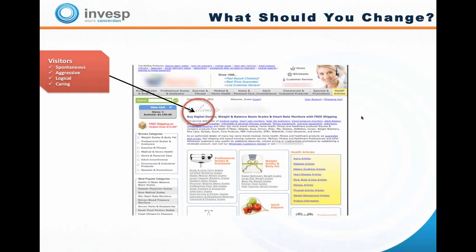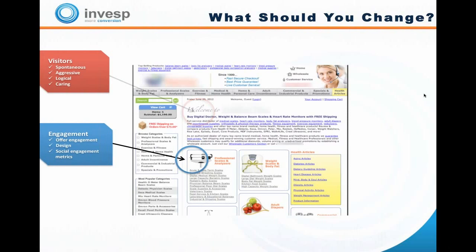Caring type personas actually read your about us page and want to get to know you closely. The site says 'since 1999' which implies many customers, but there's no way for the visitor to actually see or feel that. In terms of engagement — offer engagement, social engagement, design engagement — this site scores very low. The pictures are not engaging, there's no social engagement, and nothing in the offer that really engages the visitor.